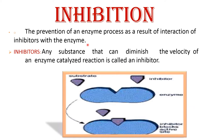Inhibition is the prevention of an enzyme process as a result of interaction of an inhibitor with the enzyme. Any substance that can diminish the velocity of an enzyme-catalyzed reaction is called an inhibitor.